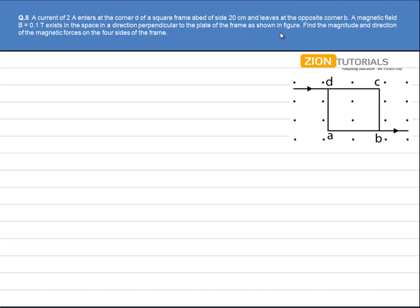A current of 2 amperes enters at the corner D of a square frame ABCD of side 20 cm and leaves at the opposite corner B. A magnetic field B equal to 0.1 tesla exists in the space in a direction perpendicular to the plate of the frame as shown in figure. Find the magnitude and direction of the magnetic forces on the four sides of the frame.